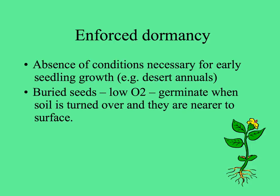With enforced dormancy, when seeds don't have what they need to germinate or for seedlings to grow, they won't be able to germinate. For example, desert annuals that grow and flower quickly and make fruit in the few weeks following rain — then the seeds spend sometimes years as seeds until water comes again. Buried seeds very deep in the soil where there's not much oxygen: when the soil is turned over and they're nearer to the surface, then they can germinate.